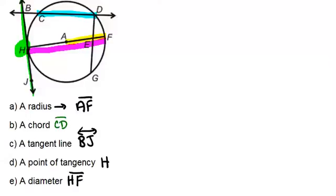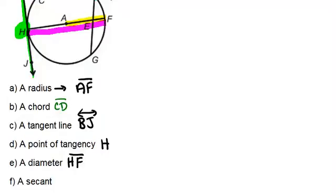And finally, the last one is a secant. And a secant is a line that passes through a circle twice. So the only secant would be this line right here. Because it passes through the circle at C and at D. So that would be line BD. It would be a secant line.